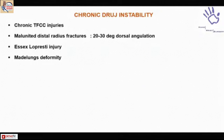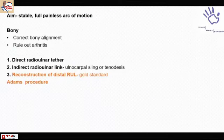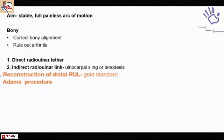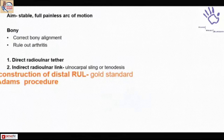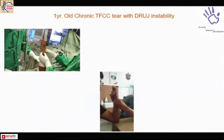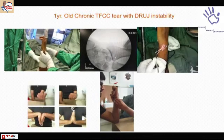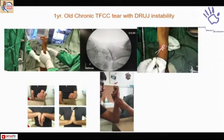Chronic DRUJ instability is seen in chronic TFCC injuries beyond 6 months, malunited distal radius fractures, Essex-Lopresti injury, and Madelung deformity. These present with loss of strength, weakness, instability, positive piano key sign, and translational instability. The aim is to correct bony alignment first and rule out arthritis, only then proceed with ligament reconstruction. The routine procedure is Adam's procedure — reconstruction using a palmaris longus graft. The instability pattern is better assessed under anesthesia; tunnels are made in the radius, the graft is passed, and reasonably good results are expected.